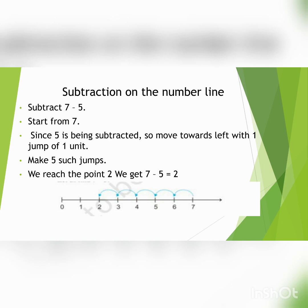Now children, you have done addition on the number line. Now we will do subtraction on the number line. We will subtract 7 minus 5. Again, draw the number line starting from 0, 1, 2, 3, 4, 5, 6, 7. Start from 7. Since 5 is being subtracted, move towards left with one jump of one unit. Make 5 such jumps. We reach the point 2. Can you see when you move 5 jumps towards left, you will reach the point 2? So we get 7 minus 5 equals 2.